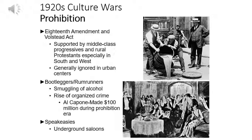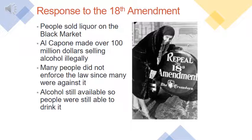The prohibition era gave birth to bootleggers and rum runners who smuggled alcohol to establishments called speakeasies, or underground saloons. This led to a rise in organized crime. The most notorious gangster of the time, Al Capone, is said to have made over 100 million dollars during the prohibition era. Public responses to the 18th Amendment were mainly to want its repeal.